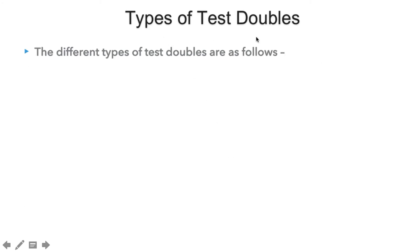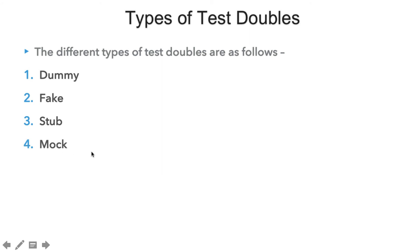There are various types of test doubles. Some of them are: the dummy test double, fake test double, stub test double, mock test double, and spy test double. Whenever we talk about test doubles, these are the five different types: dummy, fake, stub, mock, and spy.